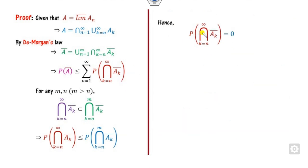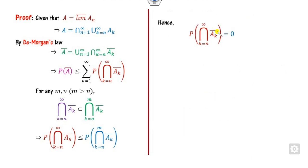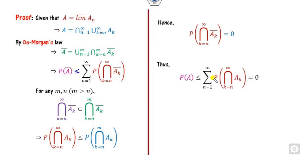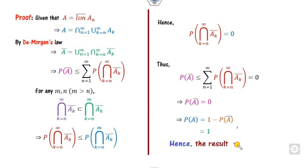Substituting, the probability of the intersection goes to 0. Since this probability is less than or equal to 0 but probability is always greater than or equal to 0, we conclude the probability of A complement is 0. Therefore, P(A) = 1 minus 0 = 1, which is the required result of the second Borel-Cantelli lemma.